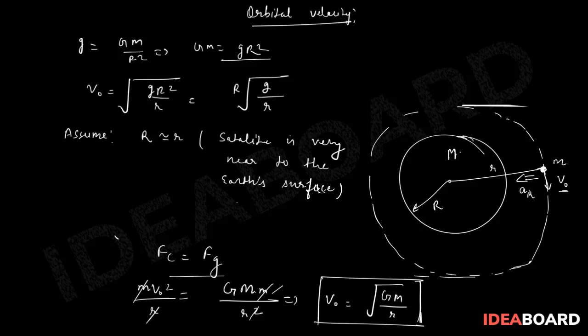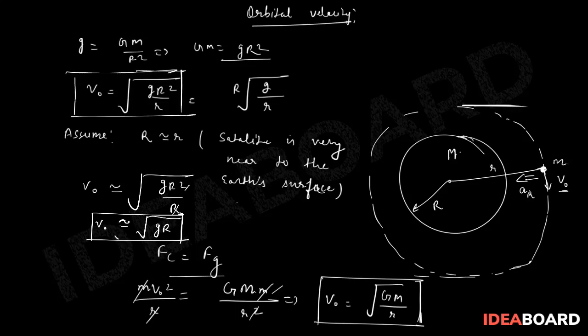That means I can utilize this relation, so v0 will be almost equal to under root of gR. This is the approximated value, and of course this is going to be the exact value of orbital velocity for anybody in space. So that is the concept of orbital velocity.